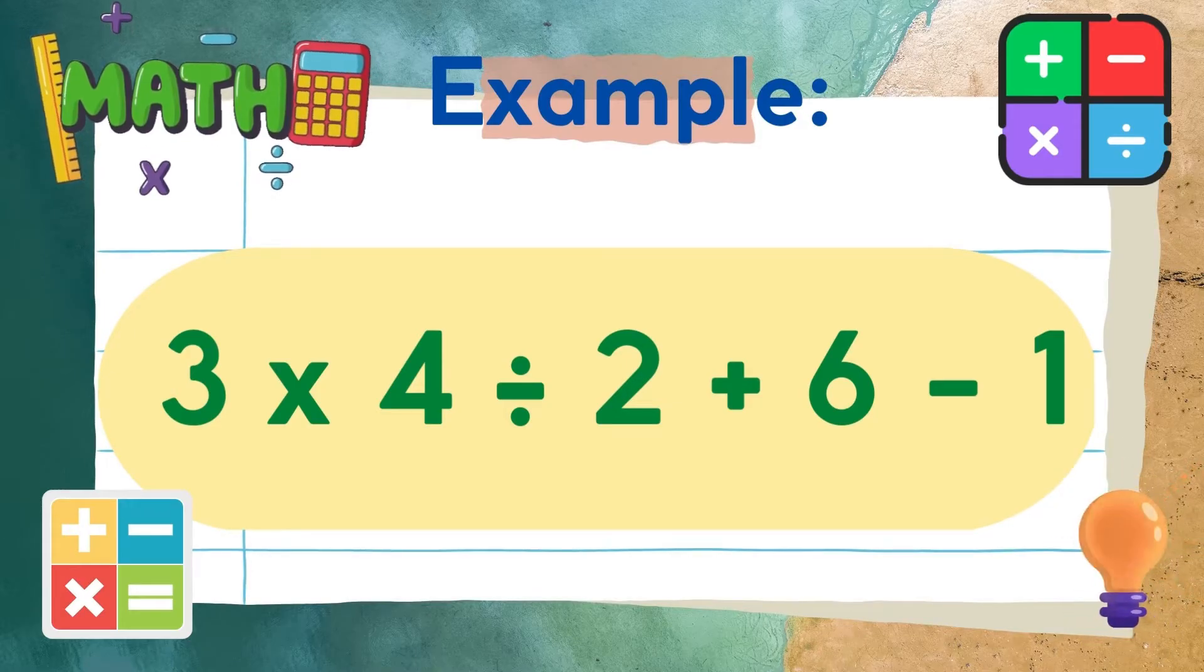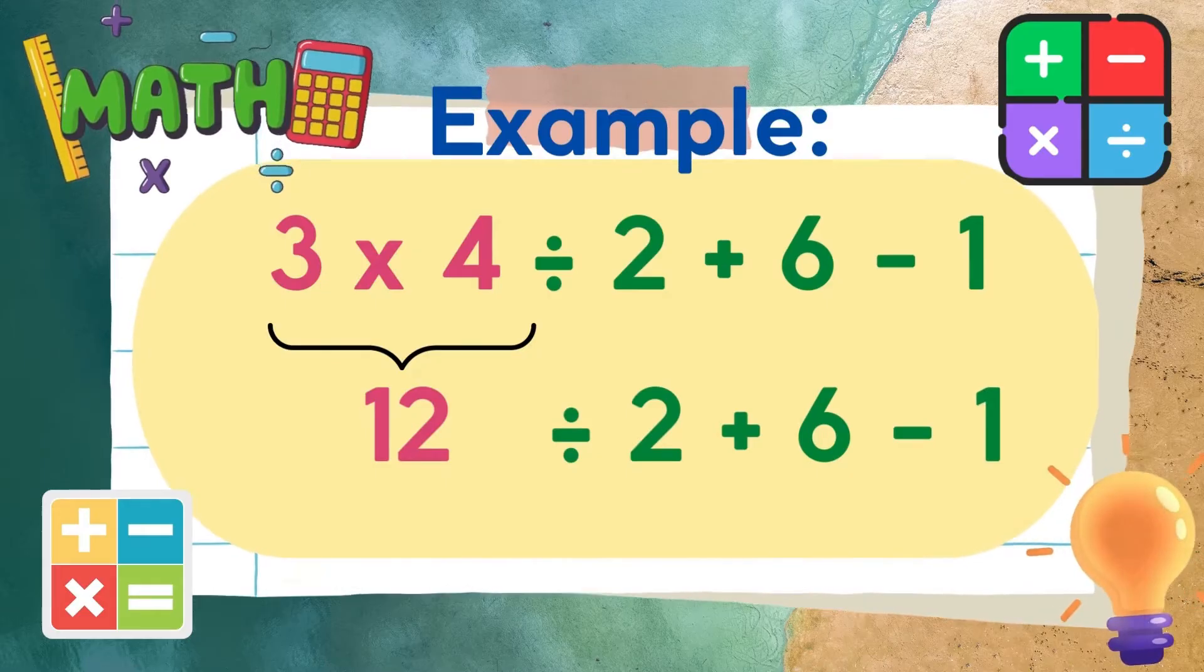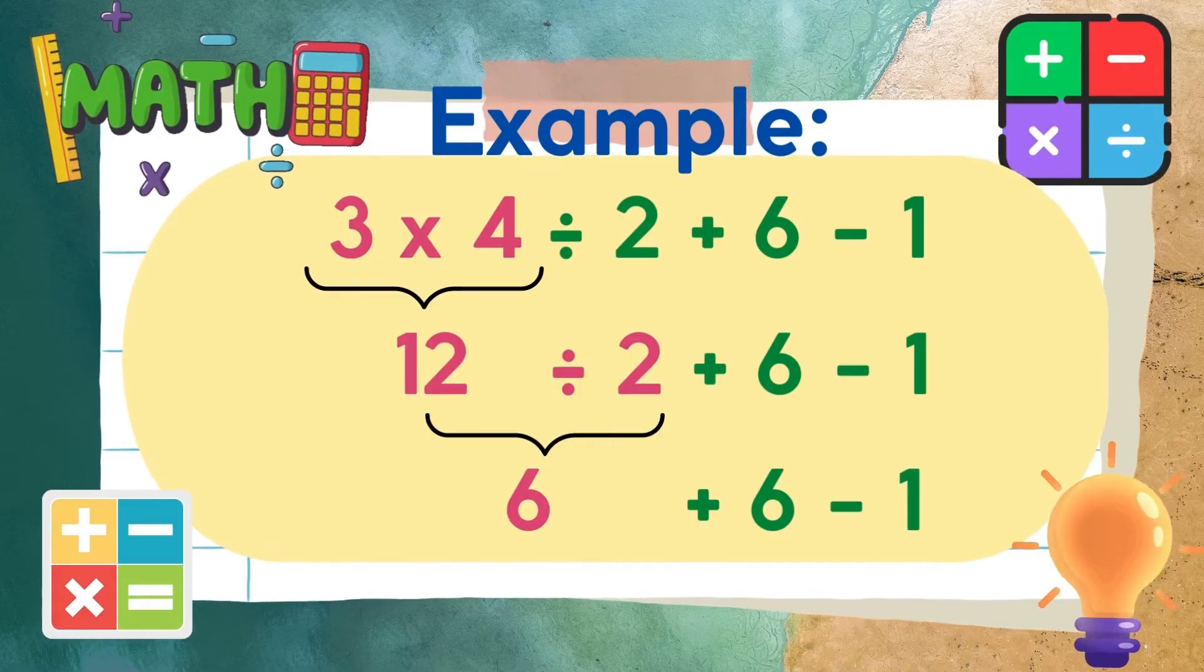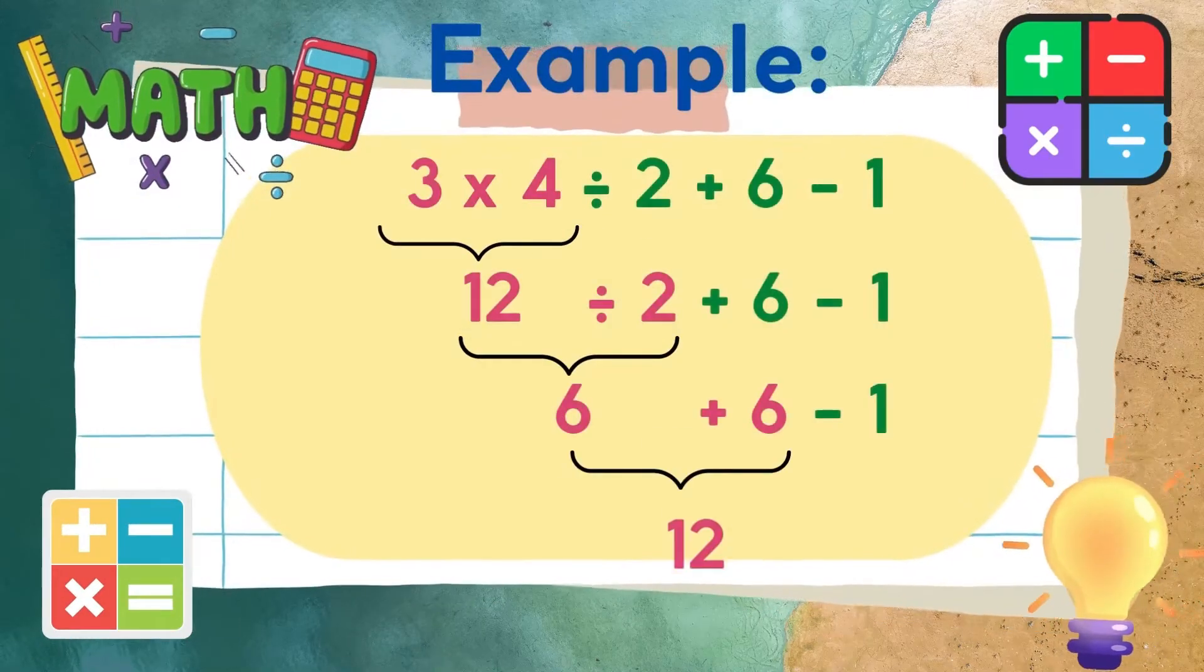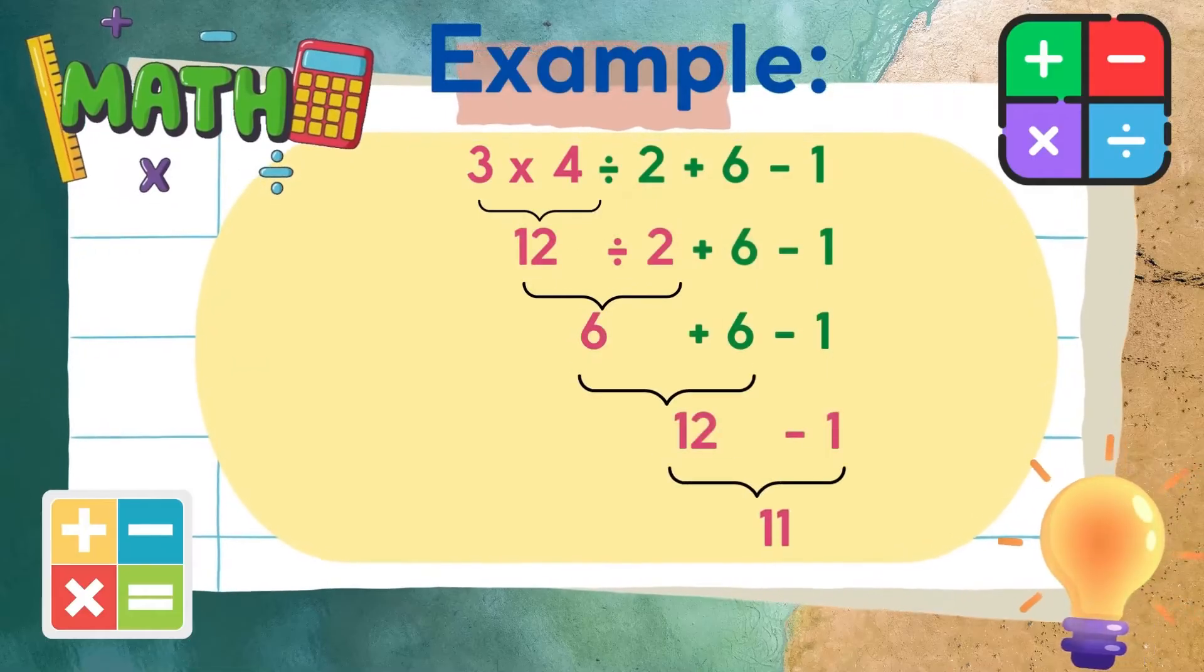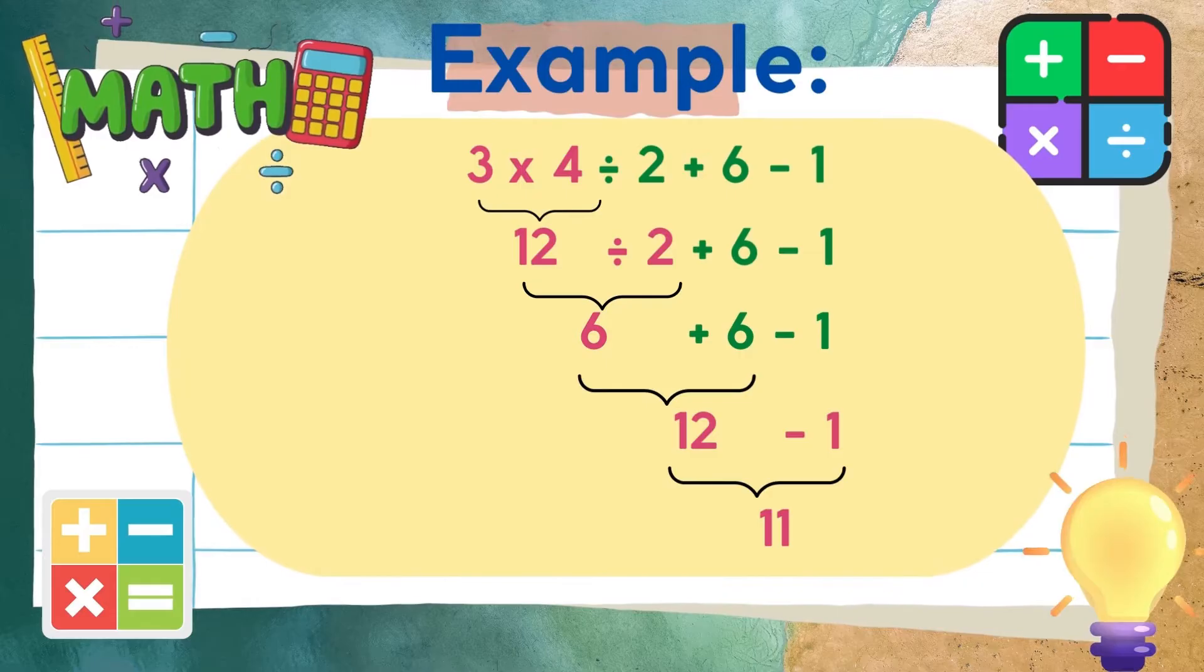First, let's multiply. 3 times 4 equals 12. Then 12 divided by 2 is 6. Afterwards, 6 plus 6 is equal to 12. Then finally, let's subtract. 12 minus 1 equals 11.